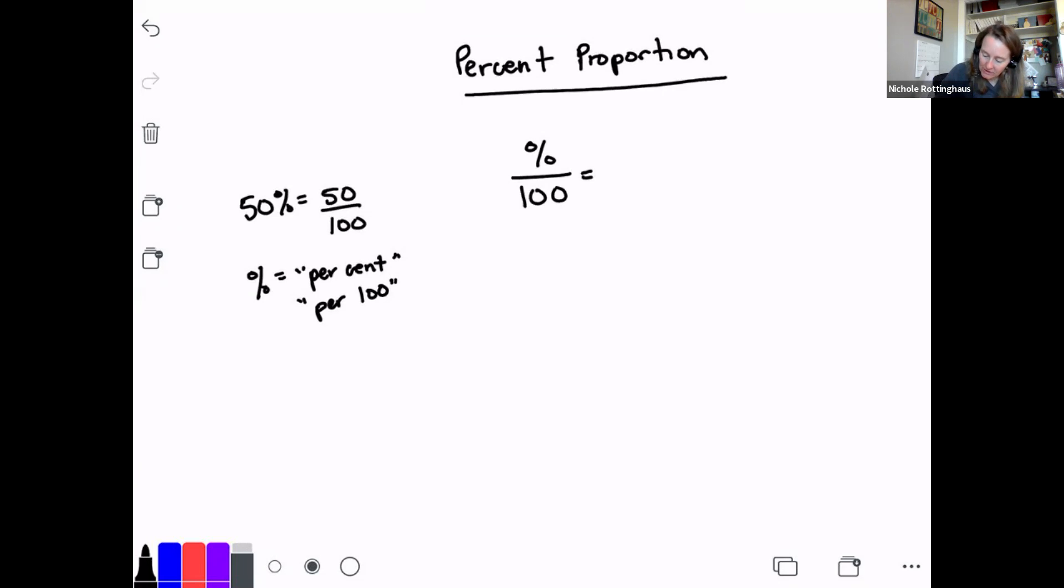A percent is just an equivalent fraction to any other fraction. And what is a fraction? A fraction is a part over a whole, right? So if I have a pizza and it's cut into eight slices, if I eat two pieces of the pizza, right? I've eaten two out of eight pieces of the pizza, right? That's a part of a whole. Well, I could ask the question, what percent of the pizza did I eat? Well, the percent is basically finding an equivalent fraction out of 100.